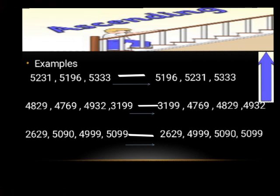And then the largest number is 5333. Next example: 4829, 4769, 4932 and 3199. First comes the smallest number, and that is 3199. Then comes 4769, then 4829, and the largest number is 4932.